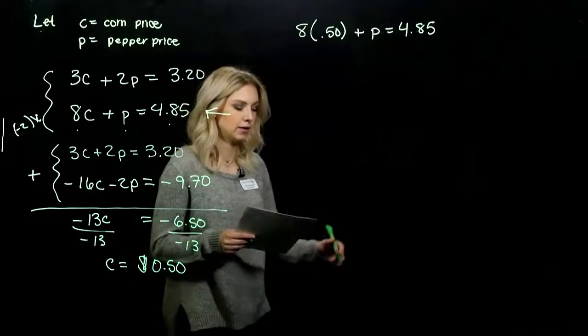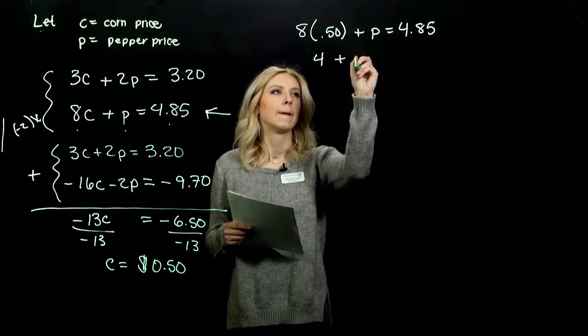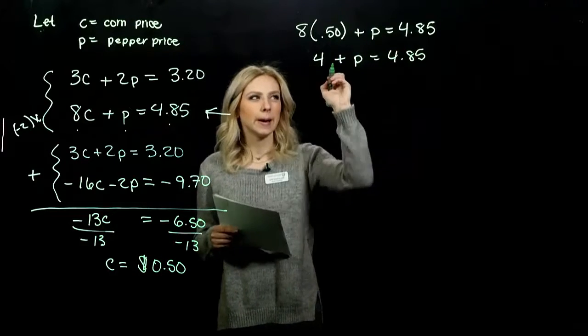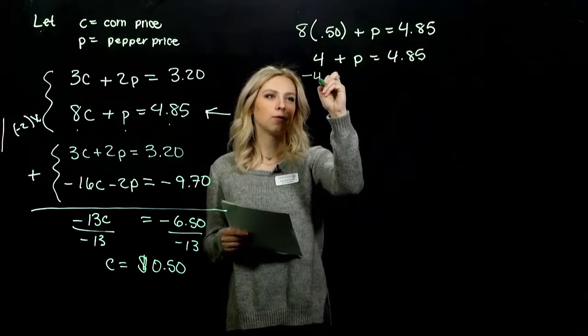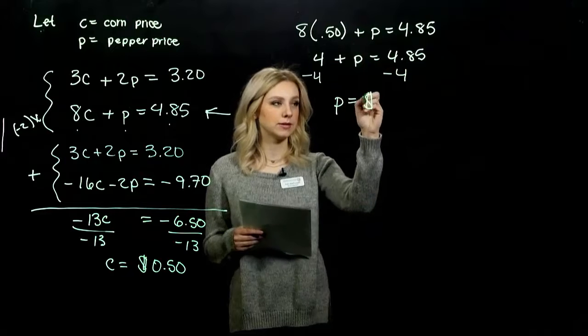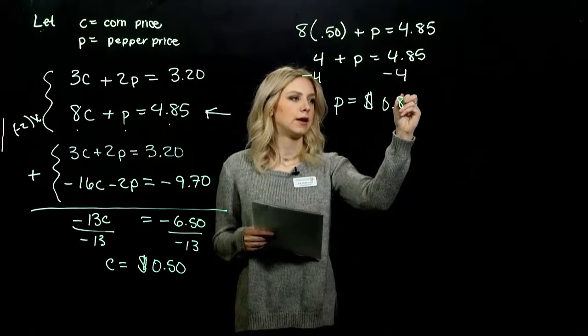So plugging it back in: 8 times 50 cents plus a pepper equals 4.85. If we do 8 times 50, we're left with 4 plus P equals 4.85. To get P on its own, we need to subtract 4 from both sides. So the price of a pepper is 85 cents.